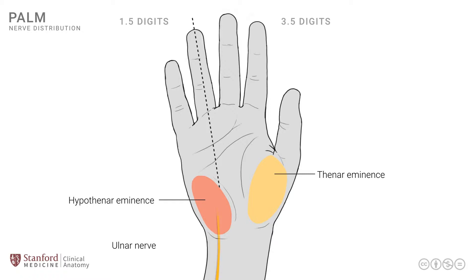The ulnar nerve supplies these 1.5 digits — that is the little finger as well as 1.5 of the ring finger. The ulnar nerve comes down the ulnar side of the wrist, crosses into the hand, and then divides into what are known as digital branches. There are two digital branches in each digit, one that runs down the medial side and one that runs down the lateral side. The ulnar nerve supplies both sides of the little finger and the medial or ulnar side of the ring finger.